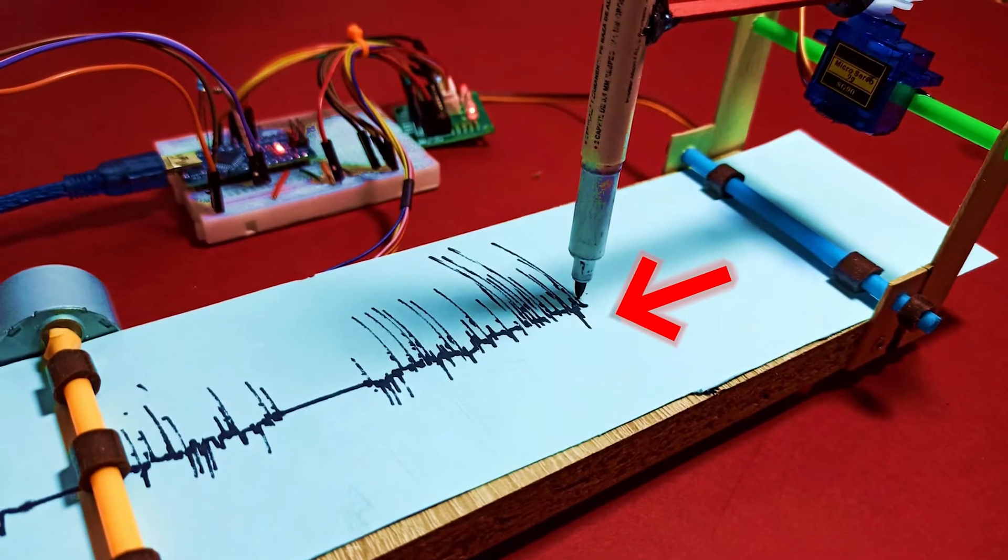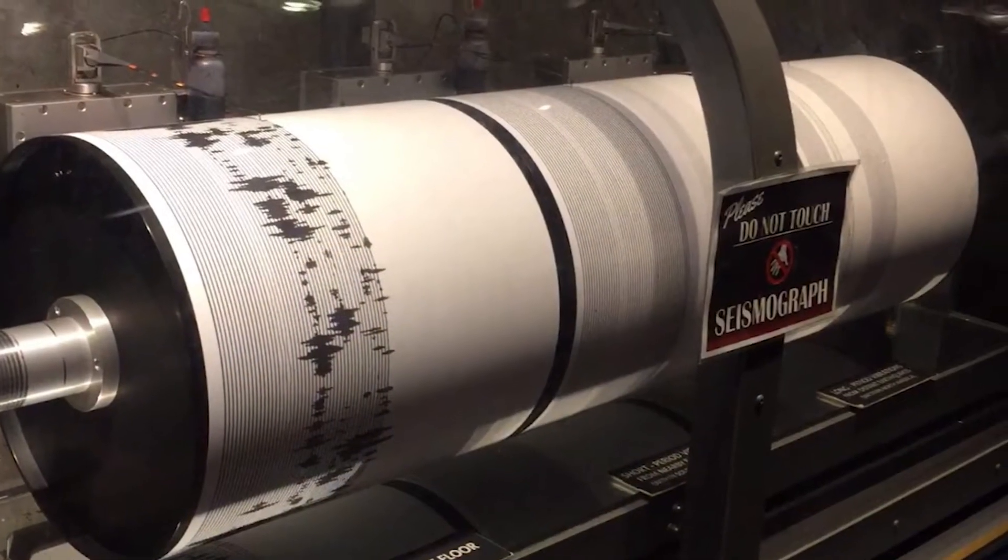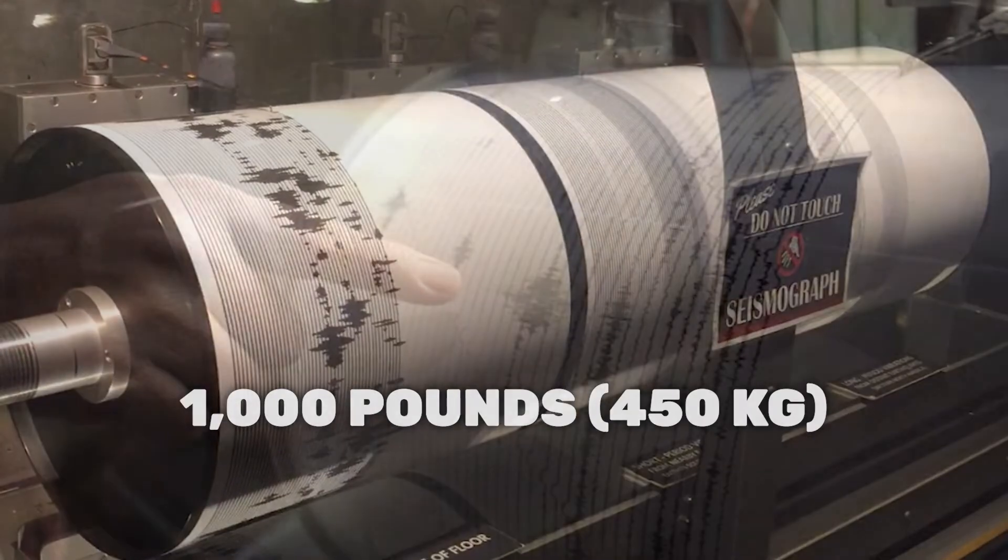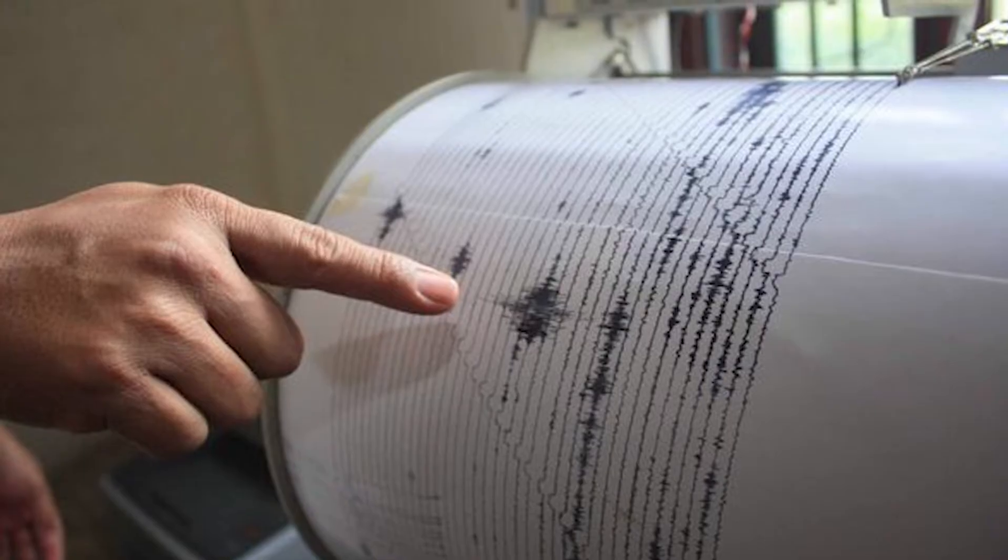However, it would take a pretty large tremor for you to see anything. In a real seismograph, levers or electronics magnify the signal so very small tremors are detectable. A big mechanical seismograph might have a weight that weighs 1,000 pounds (450 kilograms) or more, driving a set of levers that significantly magnify the pen's motion.